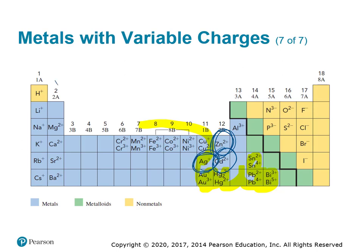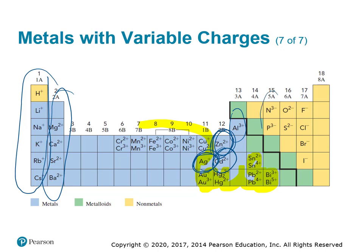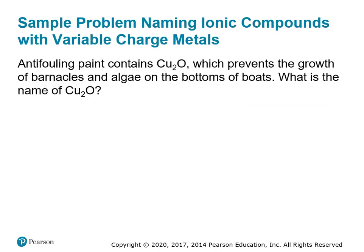Group 1 is always plus 1, group 2 is always plus 2, aluminum is always plus 3. And these non-metals are always minus 3, minus 2, minus 1.